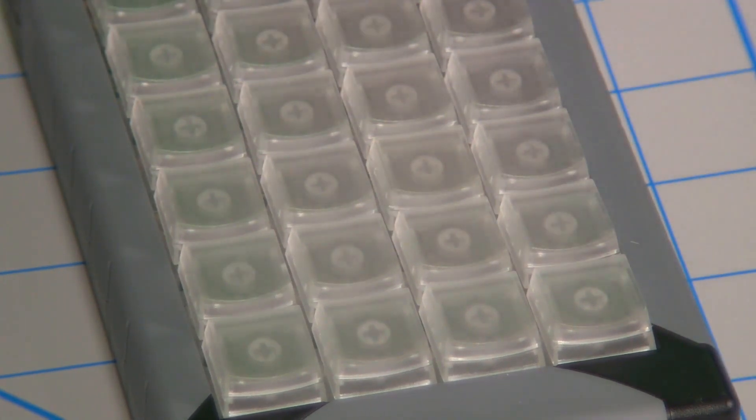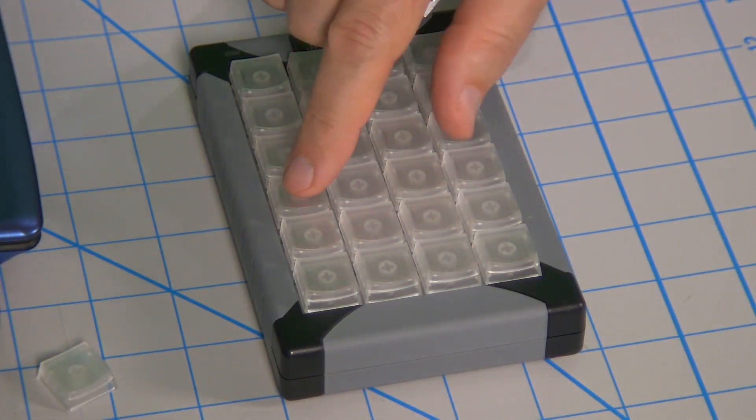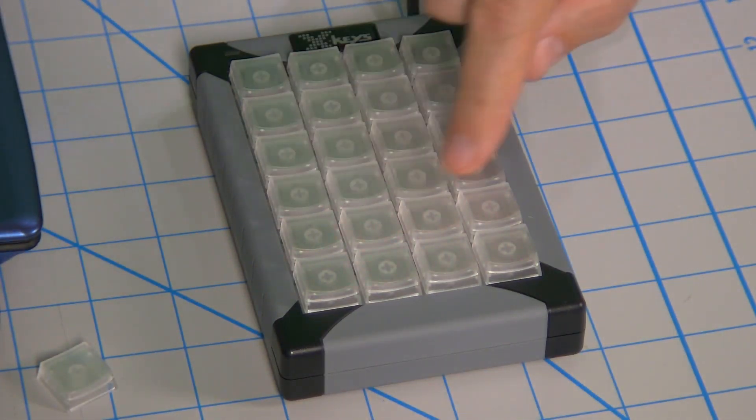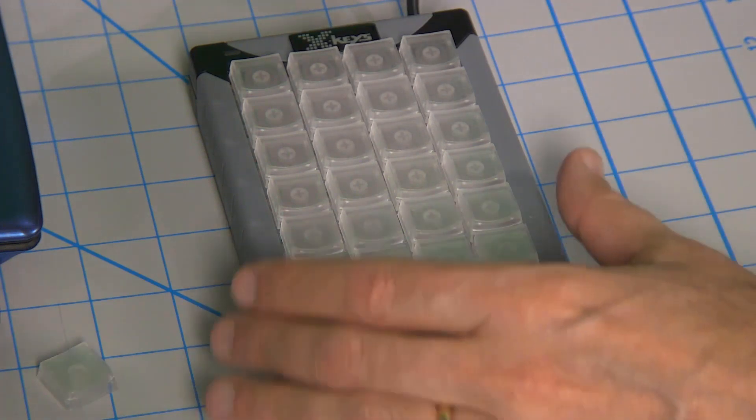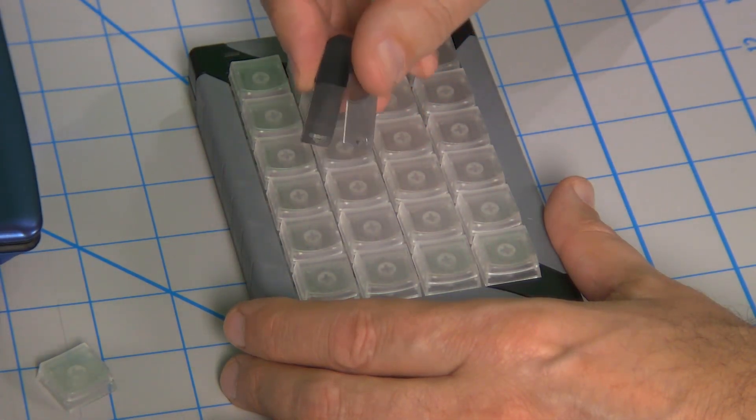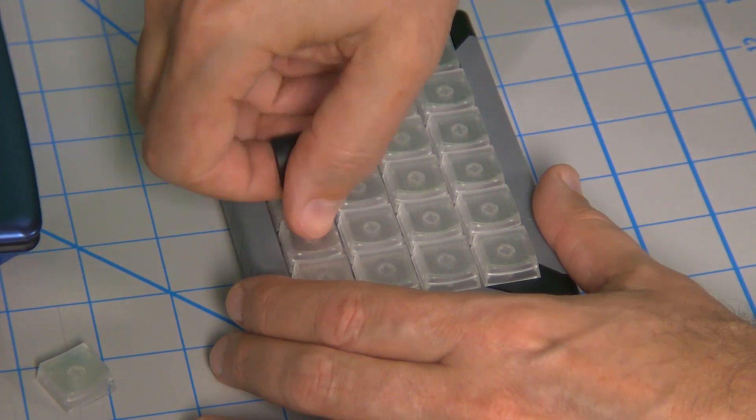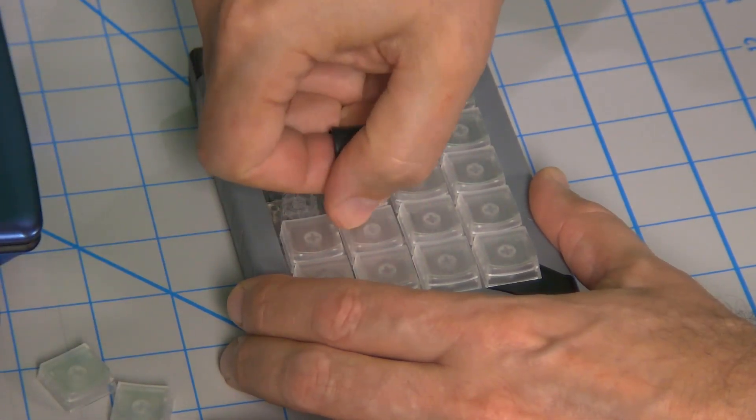So for today we're going to take this XK24 and I've decided I want to knock out this row to make my layout. I'll start with the key puller which you would find in your box with the device. You can just grab the key cap and pull it off.